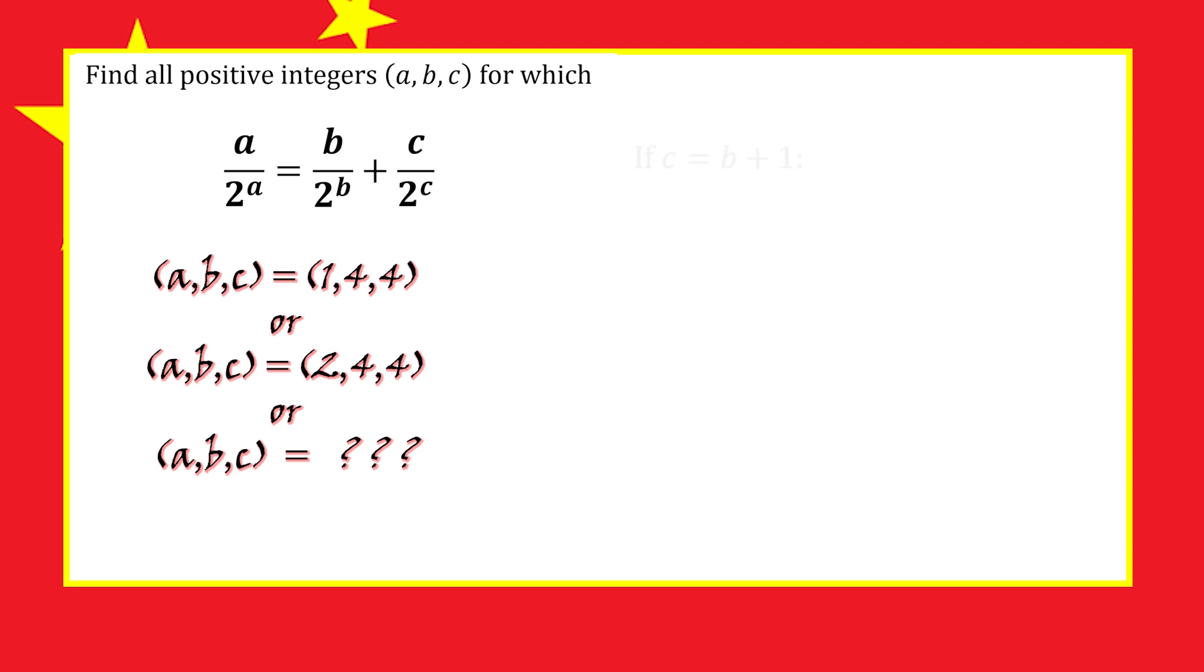Next case: what if c equals b plus 1? In that case, we can use a common denominator. The denominator will be 2 to the power of b plus 1, and on top we'll get 3b plus 1.